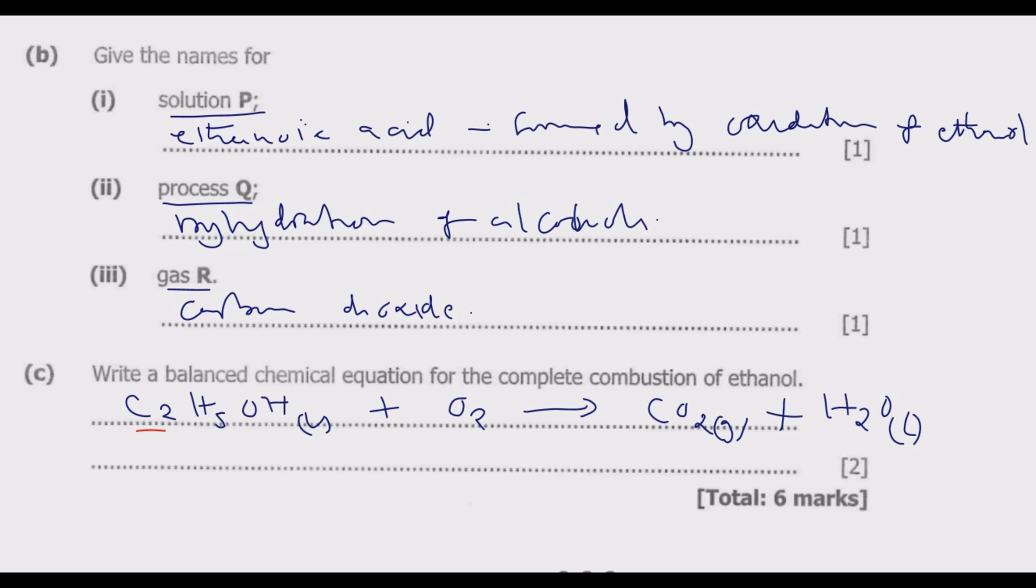This side we have two carbons, here we have one. Introduce a 2 here so we have two carbons on both sides. Because of two carbons, we have four hydrogens plus one from the OH, which is five total on the left. But here we have one plus one, which is three.